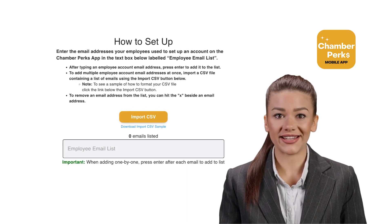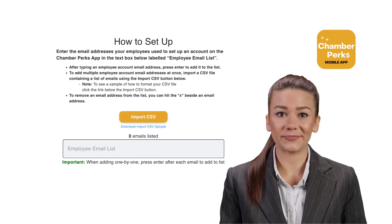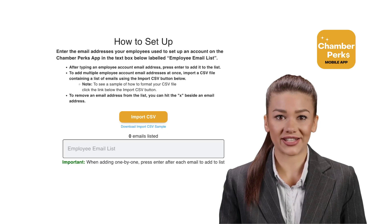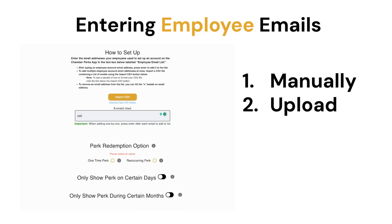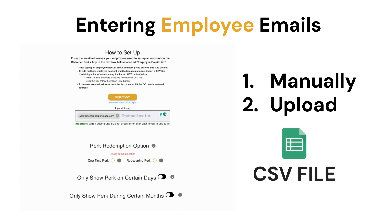Now that your employee discount is set up, you then need to enter the email addresses your employees provided you. You can add employee emails in two ways. For a smaller list of employees, you can just enter each employee's account email address and press Enter. For a more extensive list of employees, you can add multiple employee account email addresses at once by importing a CSV file containing a list of emails using the Import CSV button seen on the screen.